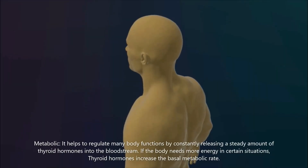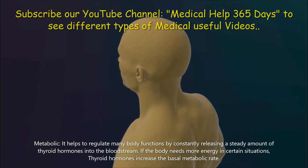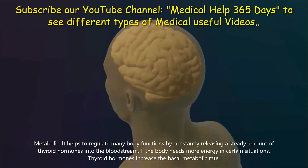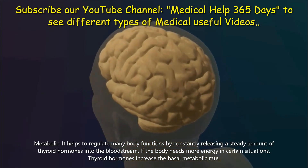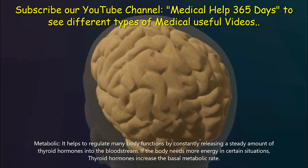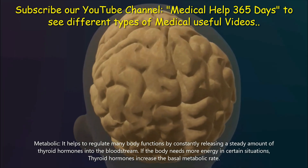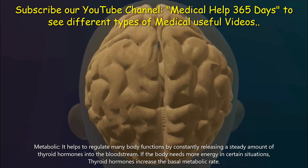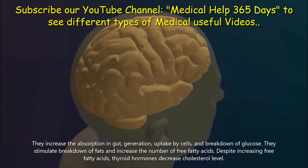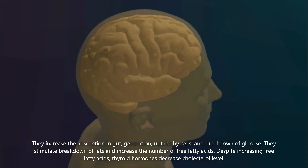Metabolic function: the thyroid helps to regulate many body functions by constantly releasing a steady amount of thyroid hormones into the bloodstream. If the body needs more energy in certain situations, thyroid hormones increase the basal metabolic rate. They increase the absorption in the gut, generation, uptake by cells, and breakdown of glucose.